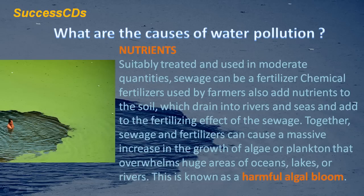Suitably treated and used in moderate quantities, sewage can be a fertilizer. Chemical fertilizers used by farmers also add nutrients to the soil which drain into rivers and seas, adding to the fertilizing effect of the sewage. Together, sewage and fertilizers can cause a massive increase in the growth of algae or plankton that overwhelms huge areas of oceans, lakes or rivers. This is known as a harmful algal bloom.